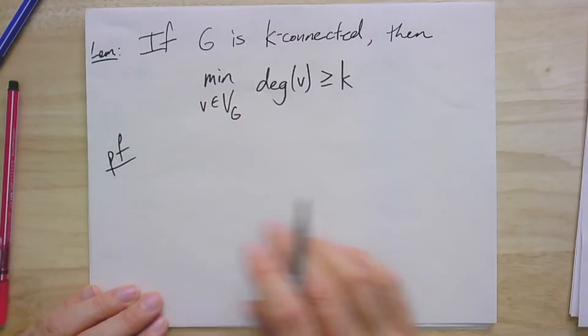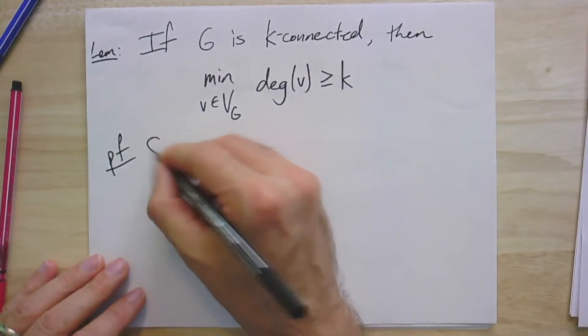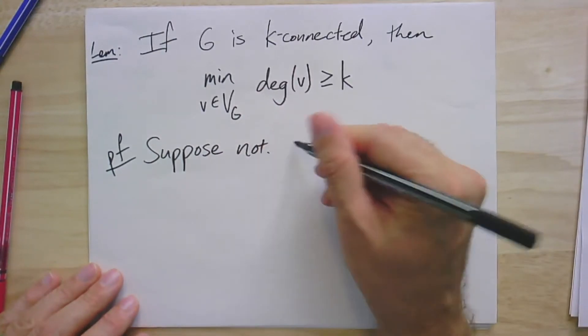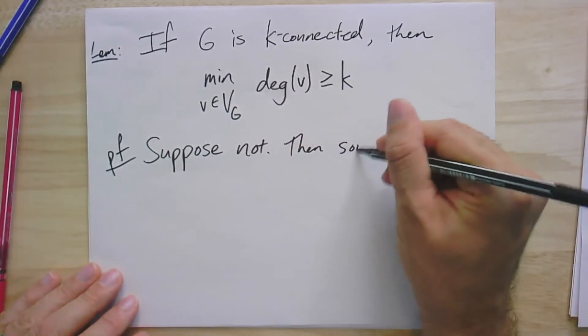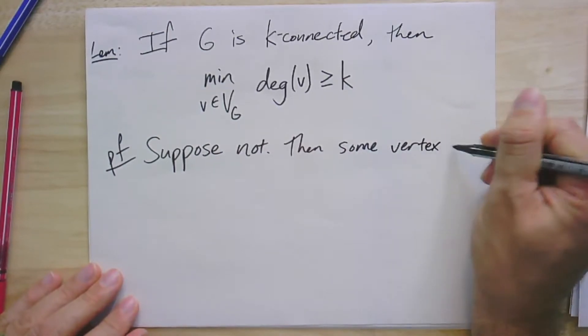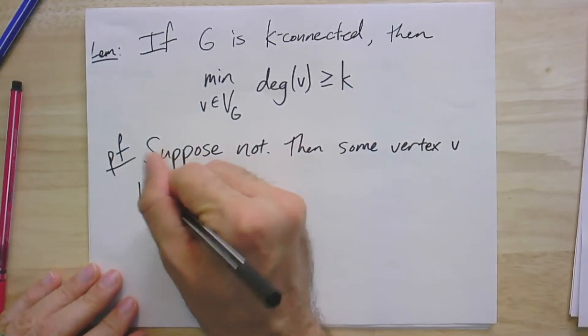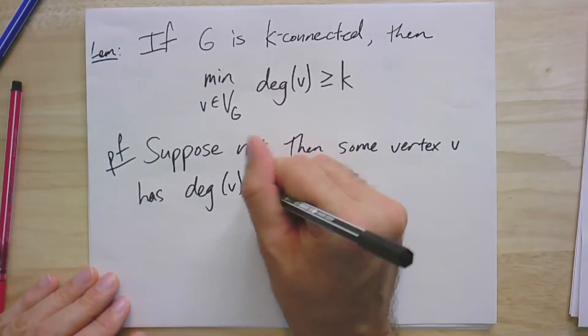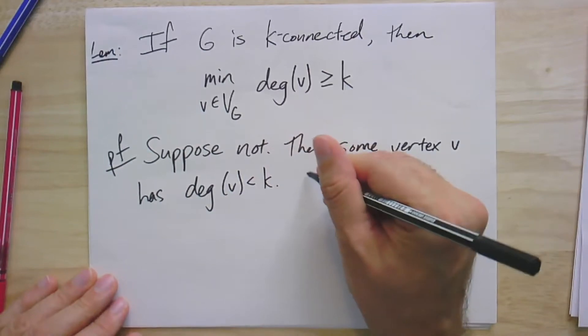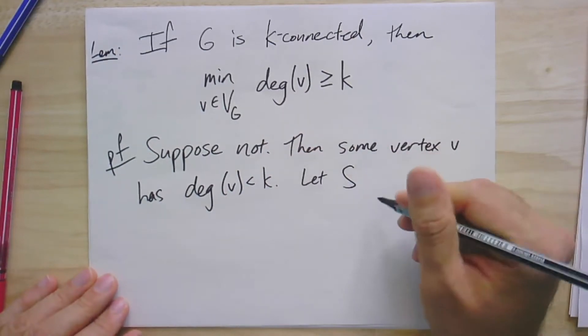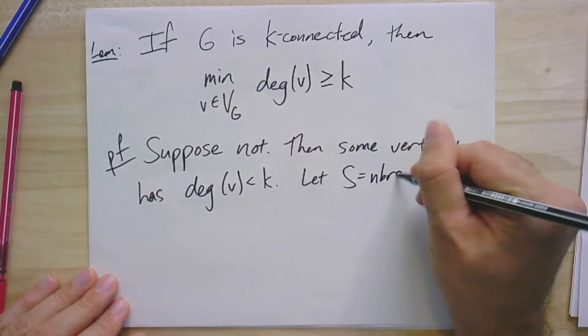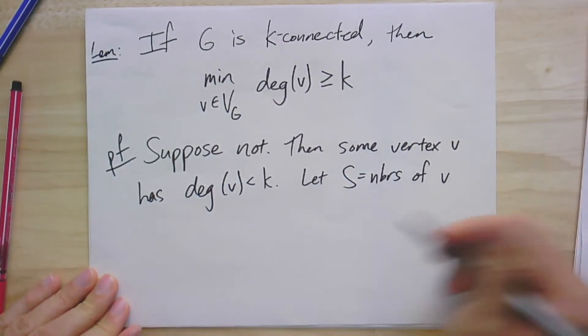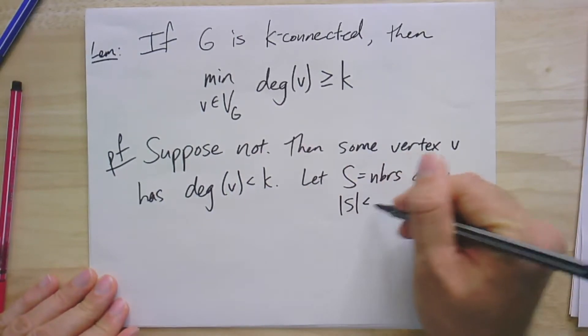The proof of this fact is also pretty straightforward. It's just, let's just do it by contradiction. So, suppose not. Then, some vertex, let's call it V, has a degree that's small. It has a degree of V less than K. And so, you let S, our separator, be equal to the neighbors of V, all the vertices adjacent to V. And it must be the case because of the degree here that the size of S is less than K.